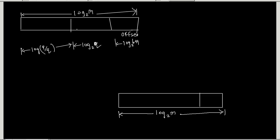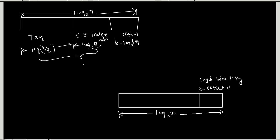Now let's compare direct mapping and associative mapping. One address is divided according to the direct mapping rule and the other according to the associative mapping rule. The offset in both cases would be of the same length — always log b bits long. The tag bit is longer in associative mapping compared to direct mapping, because the tag bits of direct mapping and the cache block index bits are combined together to form one tag part in associative mapping.